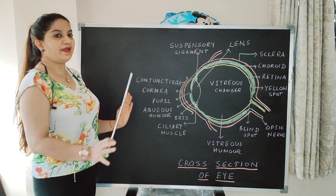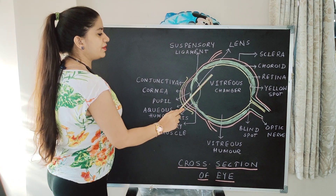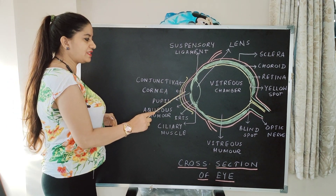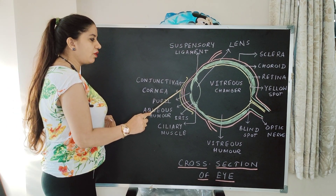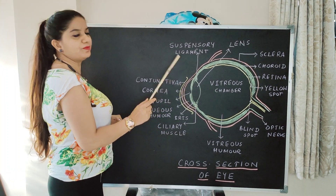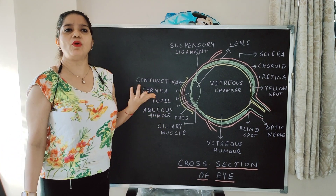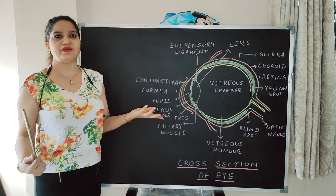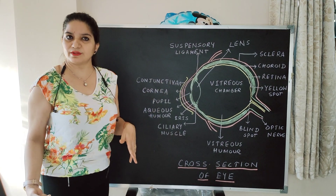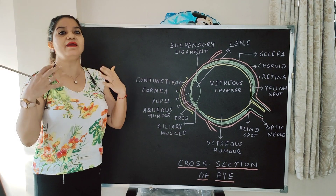The eye has got two chambers. The aqueous chamber is in the front and the vitreous chamber is behind the lens. The aqueous chamber is present between the cornea and the lens, and it has a fluid known as aqueous humor. The function of aqueous humor is to basically lubricate and moisten our eye. If your eyes become very dry, you are lacking aqueous humor, so you should drink lots of water.